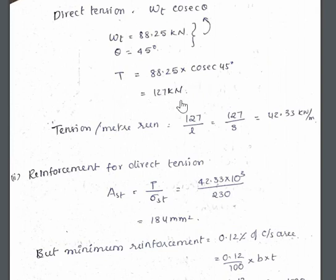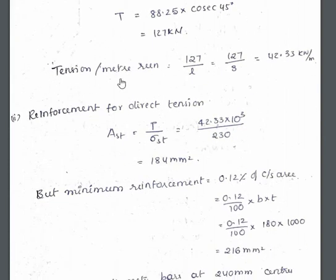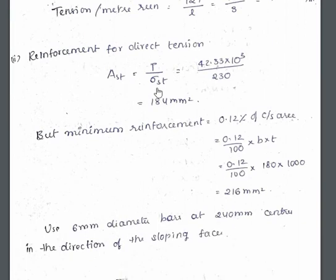The direct tension T = Wt × cosec(theta). Wt is 88.25 kilonewtons, theta is 45 degrees, so T = 88.25 × cosec(45°) = 127 kilonewtons. This is the tension per meter run, so we divide by the length of 3 meters to get the tension value per unit length.